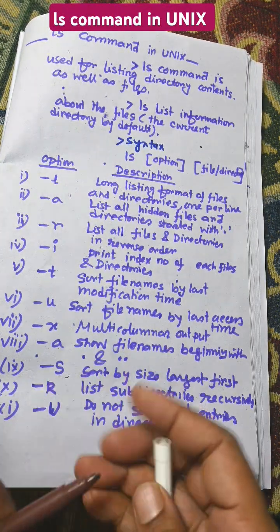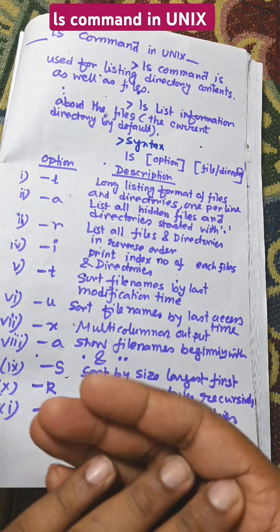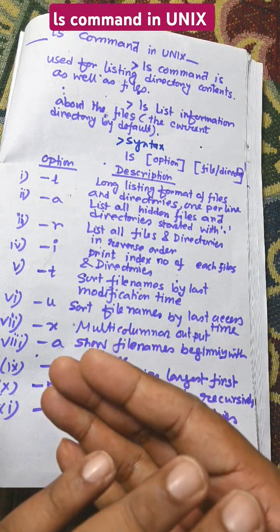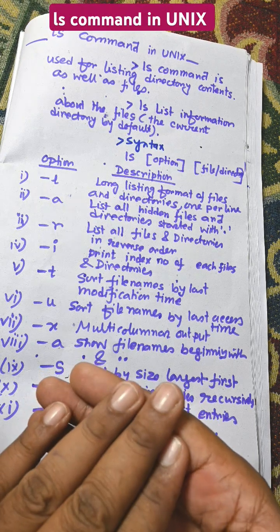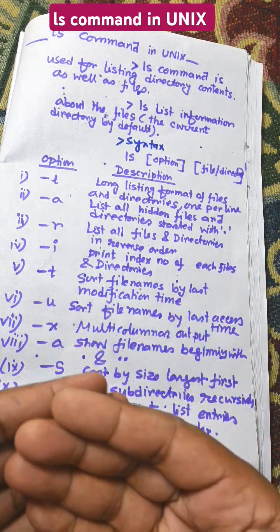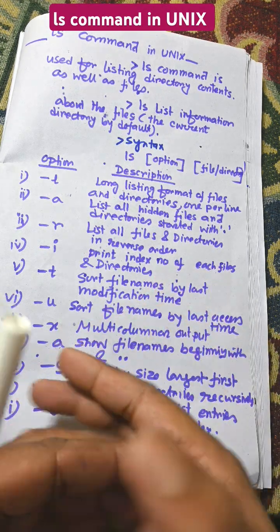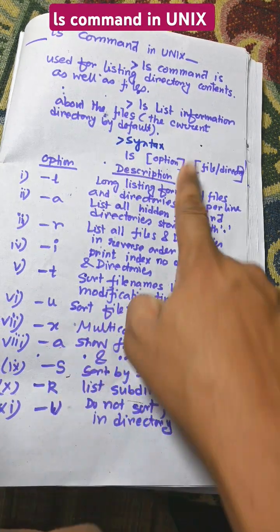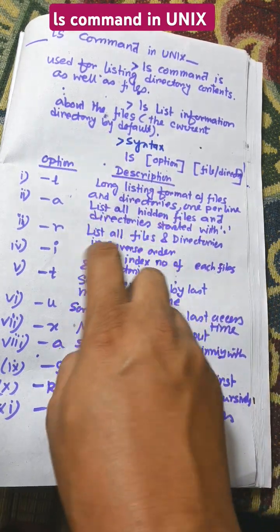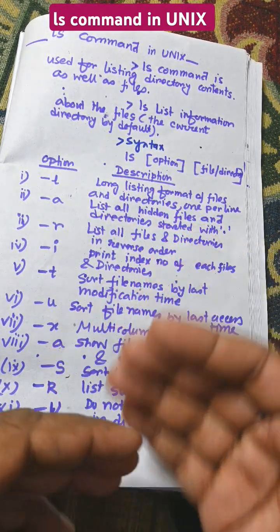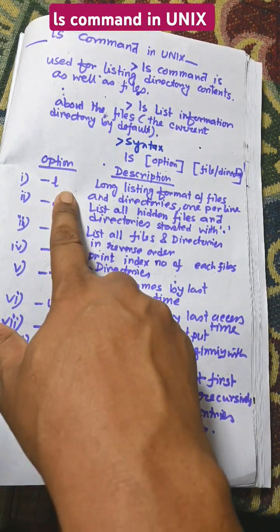These are the options of ls command. So ls command is basically used to listing all the files and directories in the Unix system. The syntax is easy: ls options in third bracket, meaning this is optional. You can write options or you cannot write options.